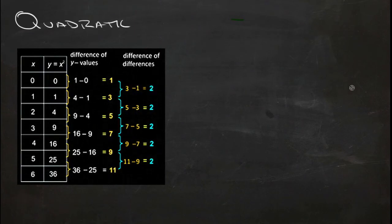If, on the other hand, the differences between your values aren't the same, for instance here, if we look at this table, this is a quadratic model.